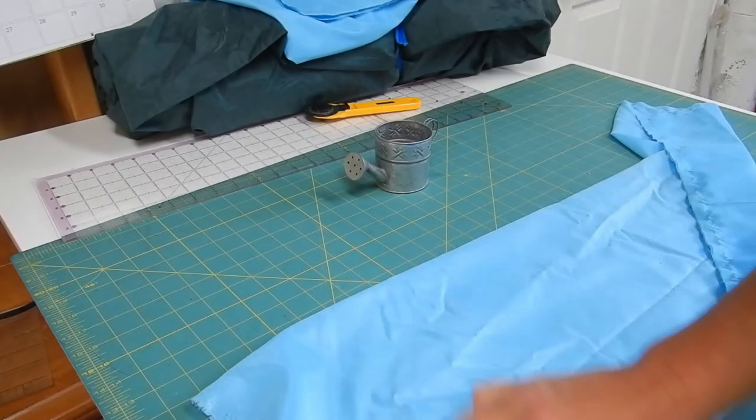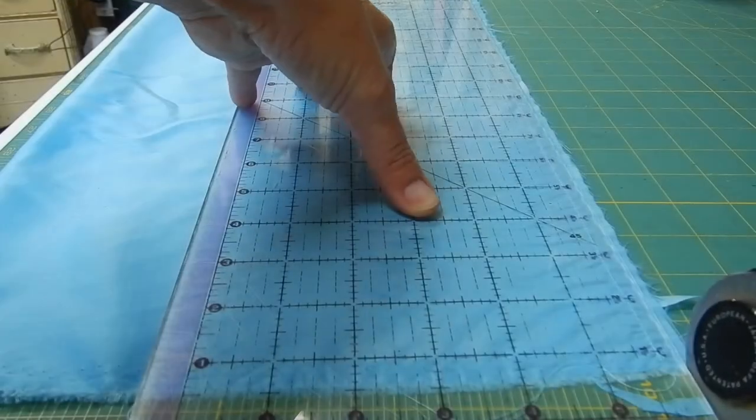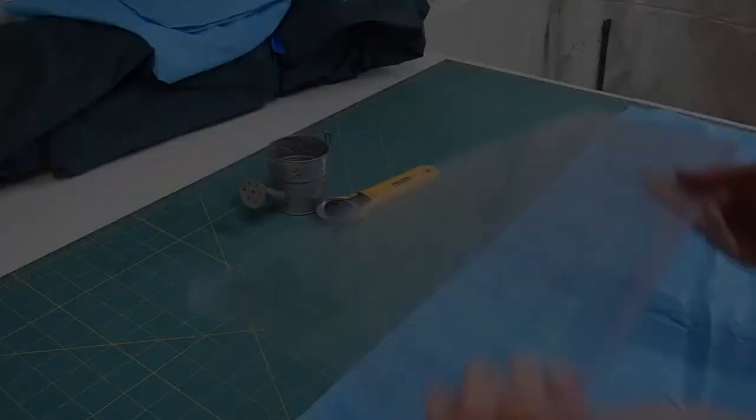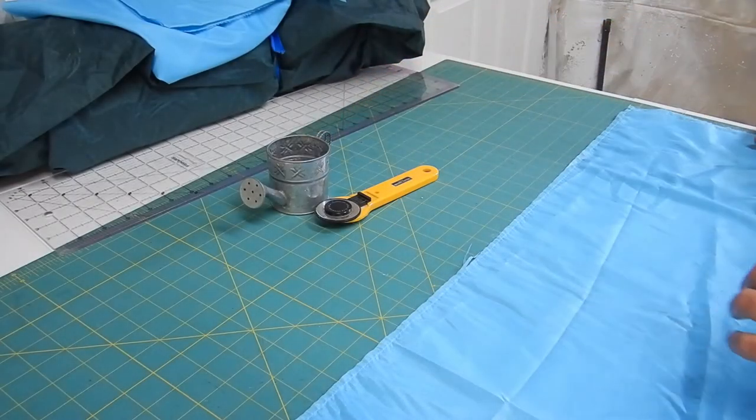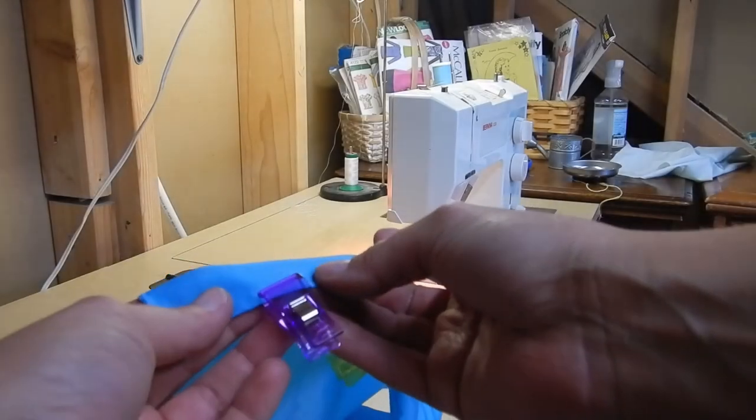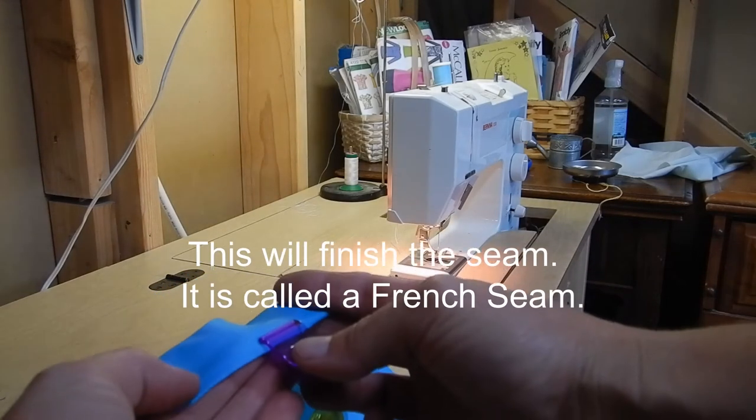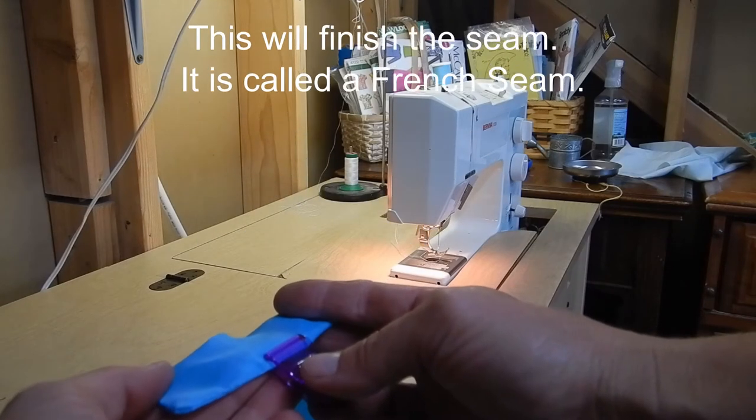So now I need to trim the seam just a little closer. After trimming the seam, the next step is to turn the bag. I've got the seams just pinned so they're not going to slide around. And I'm going to do a half inch seam allowance around that edge.